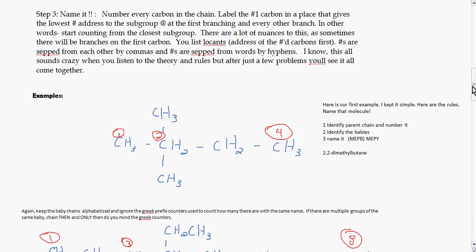Step three, number every carbon in the chain. You want to label the number one carbon in a place that gives the lowest number address of the subgroup at the first branching and every other branch. So in other words, start counting from the closest subgroup. There are a lot of nuances to this as sometimes there will be branches in the first carbon. The address of the carbons are called locants. Numbers are separated from each other by commas, and numbers are separated from words by hyphens. This is all sounding crazy when you listen to the theory and the rules, but after a few problems you'll see it all come together.